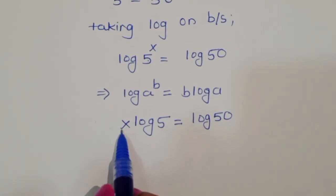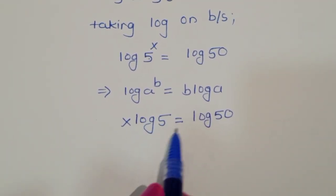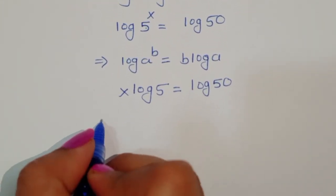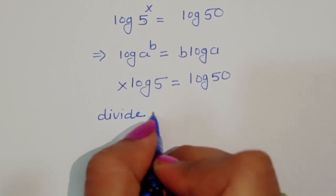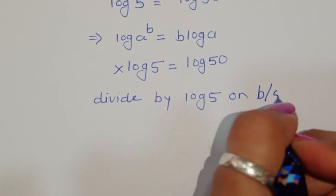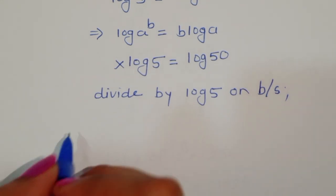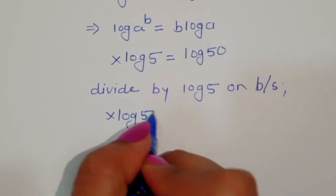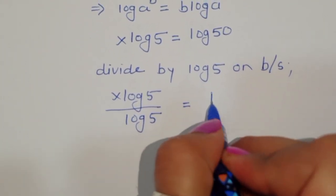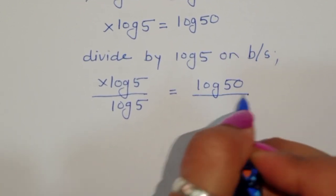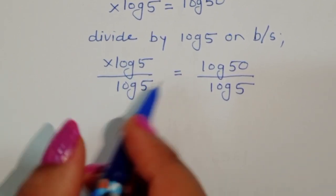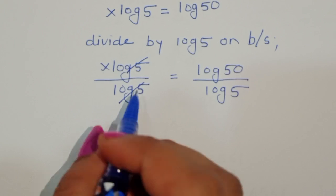We need to find the value of x, so we divide both sides by log(5). Then x·log(5) divided by log(5) is equal to log(50) divided by log(5). The log(5) terms cancel on the left side, leaving x.